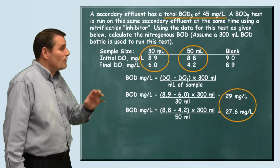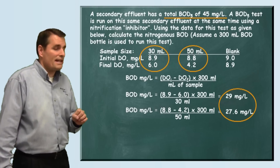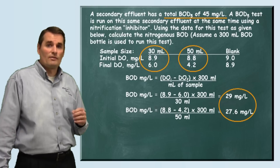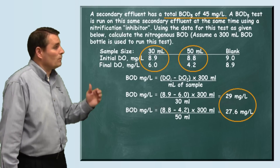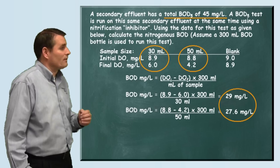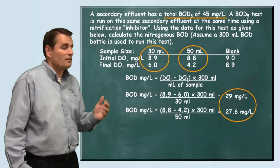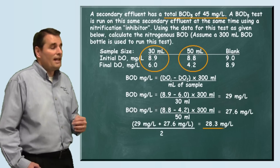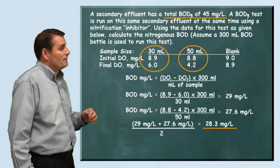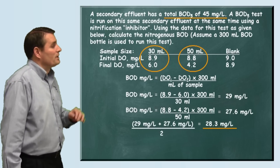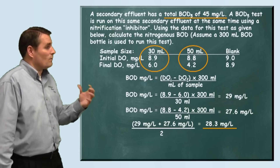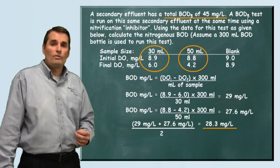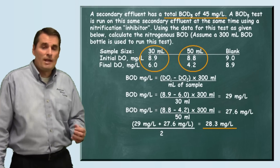Now that we have both of these samples, we're going to average them to get our result. So we add the 29 milligrams per liter to the 27.6 milligrams per liter and divide by 2. When we do that, our result is 28.3 milligrams per liter.